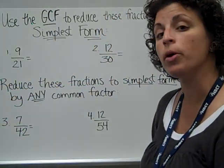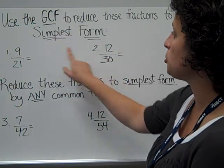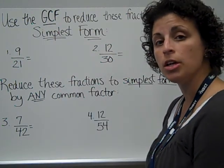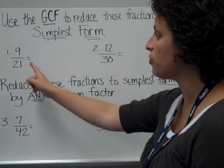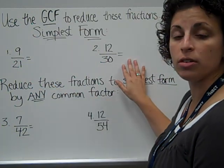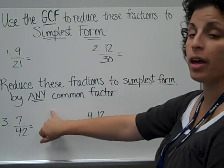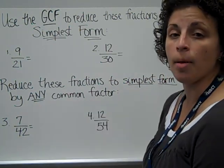I would like for you to try both of these strategies in your math journal. On the first two problems, I would like for you to use the greatest common factor. So actually make your list, find the greatest factor that they share, divide by that to find the simplest form of both of these fractions. And then try the other strategy where you can reduce these fractions by any common factor.